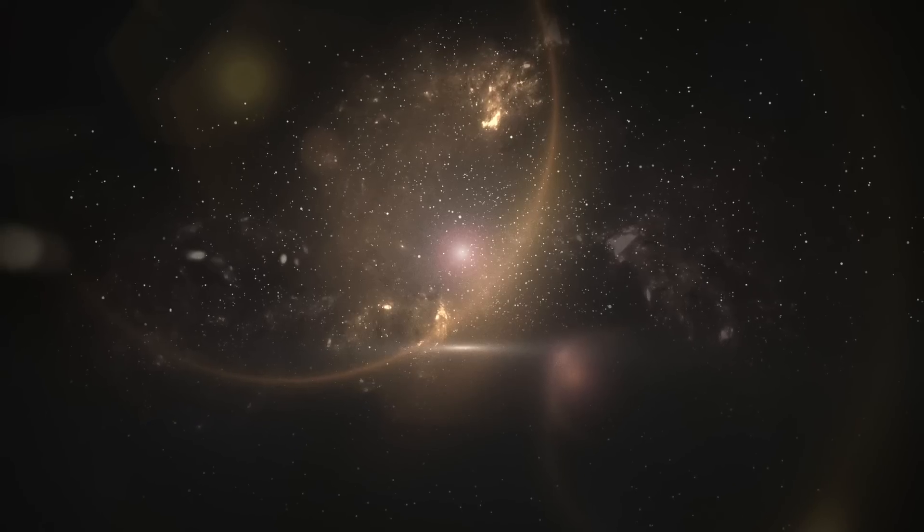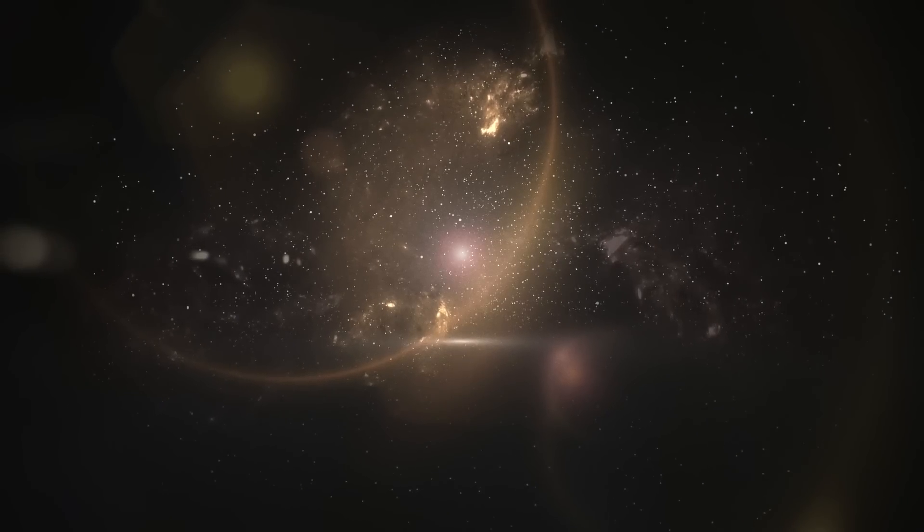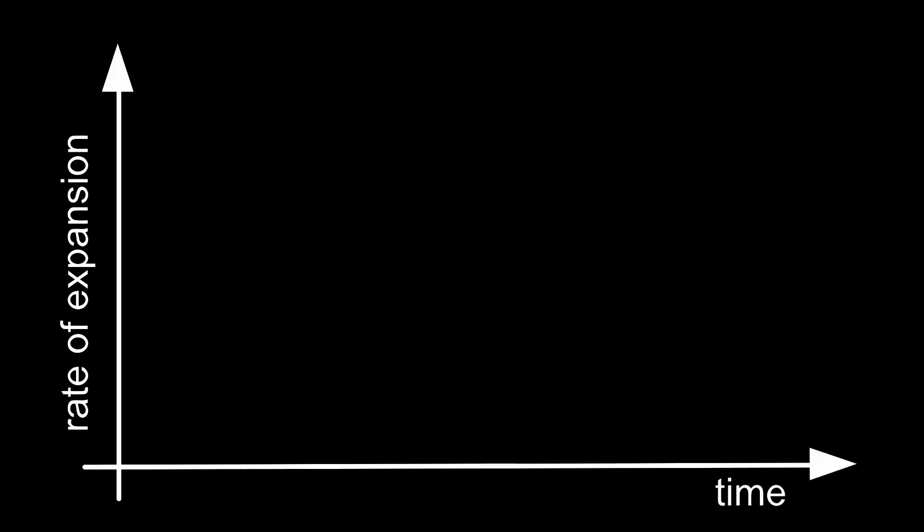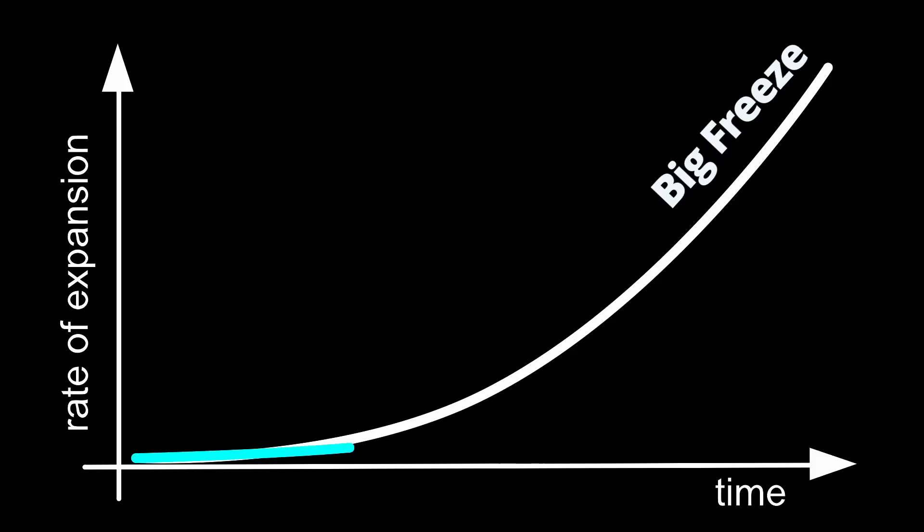This matters because the value of W determines the ultimate fate of the universe. With W at minus 1 or larger, the universe will expand faster and faster and get darker and darker and colder and colder in a rather boring way that's sometimes called the big freeze. It might also re-collapse, which is called the big crunch.